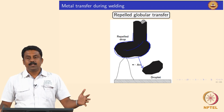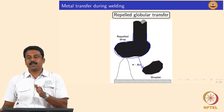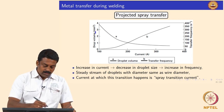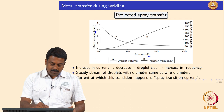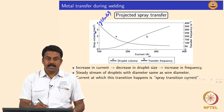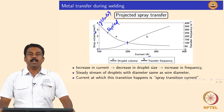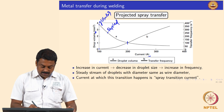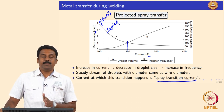As you increase the current from globular transfer, you see a change in transfer mode. On the graph of drop volume as a function of current: at lower current, the frequency is very low and the diameter is very high — that is globular transfer. As you increase the current, the droplet diameter decreases and the frequency also increases. After a critical current, globular transfer becomes spray transfer, and that current is known as spray transition current — a very critical parameter in GMAW welding.